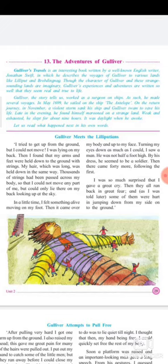Gulliver meets the Lilliputians. Lilliputians are very small persons. This is an island of Lilliput. 'I tried to get up from the ground but I could not move. I was lying on my back. I found that my arms and feet were held down onto the ground with strings. My hair, which was long, was held down in the same way. Thousands of strings had been passed across my body so that I could not move. I could only lie there on my back looking up at the sky.'